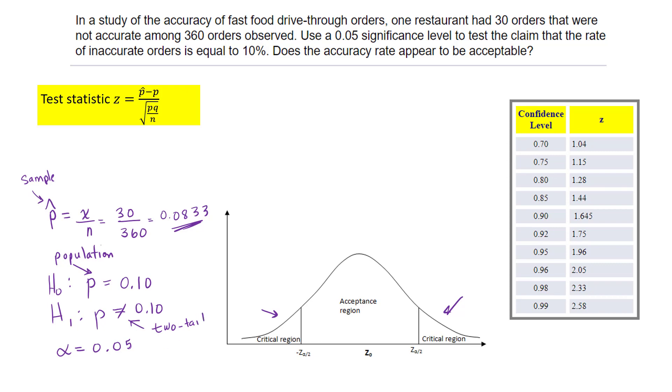Since this is a two-tailed test, indicated by the 'not equal,' we divide alpha in half. This gives 0.025 in each rejection region tail, meaning the middle area is 0.95. These three areas add up to 100%.